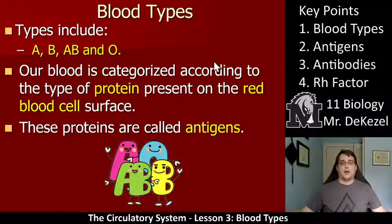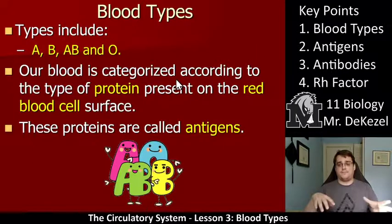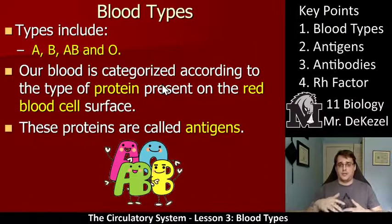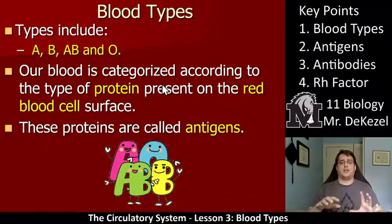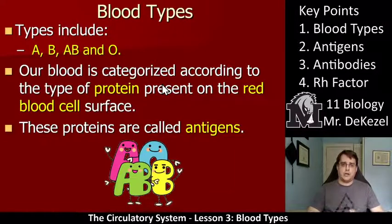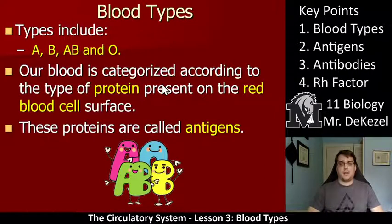There are four blood types — well, there's really eight, but there are four of them that are split into two groups each. So we'll focus on the four different types first. There is blood type A, blood type B, blood type AB, and blood type O.